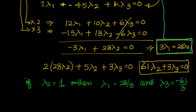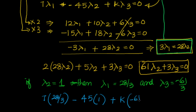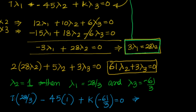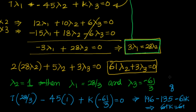Now this should be satisfied by the third equation. Substituting: 7 into (28/3) minus 45 into 1 plus k into (minus 61/3) equal to 0. Multiplying throughout by 3 to clear the fractions: 7 into 28 gives 196, minus 135, minus 61k equal to 0. That gives 61k equal to 61, or k equal to 1.